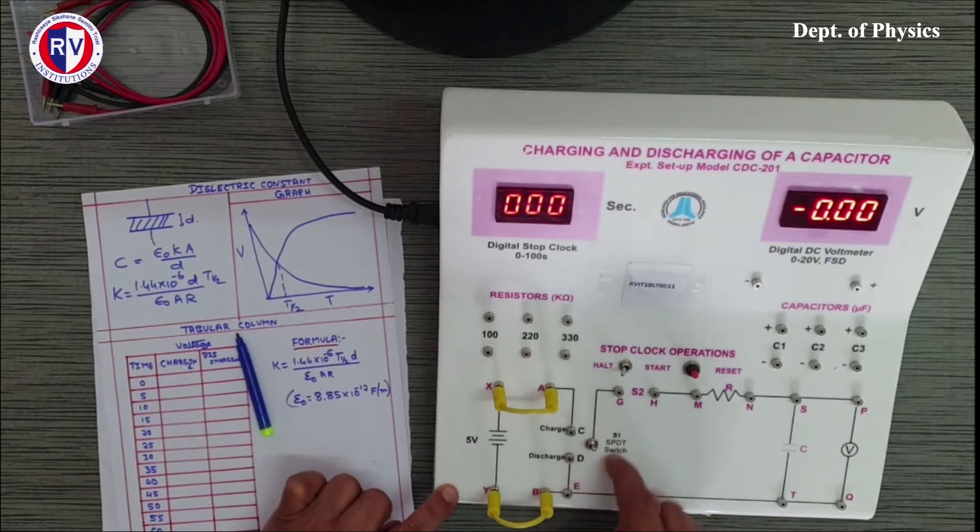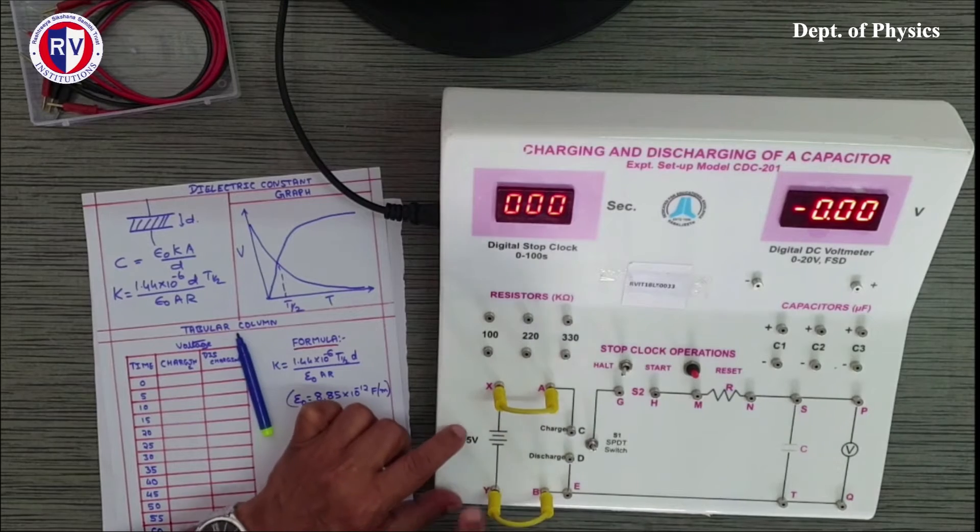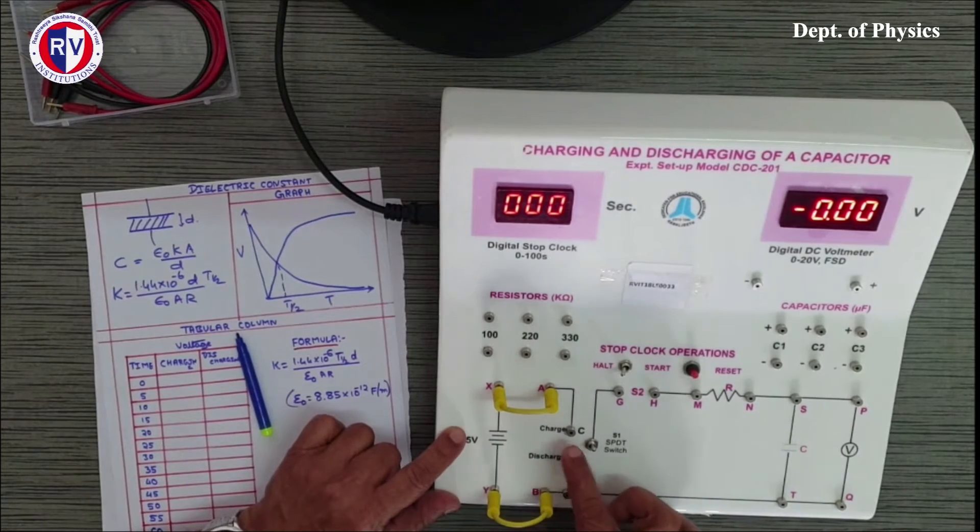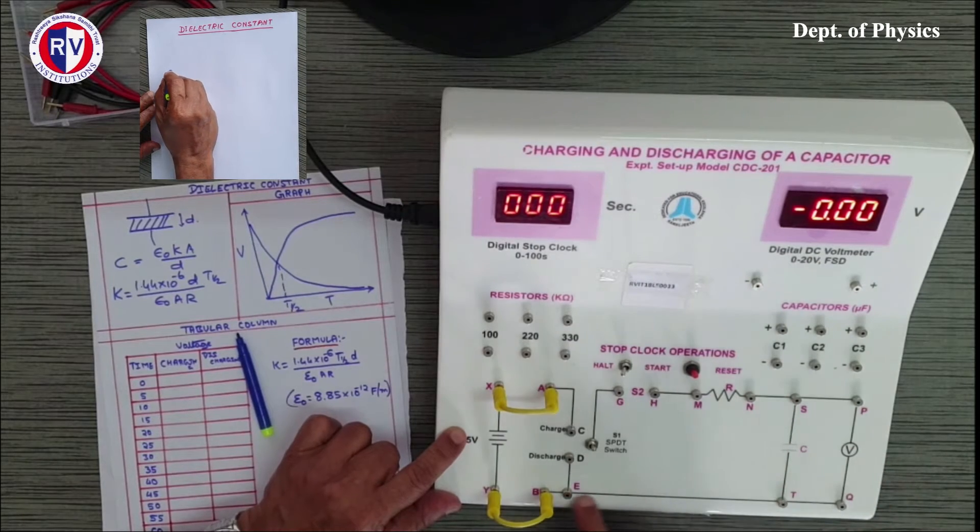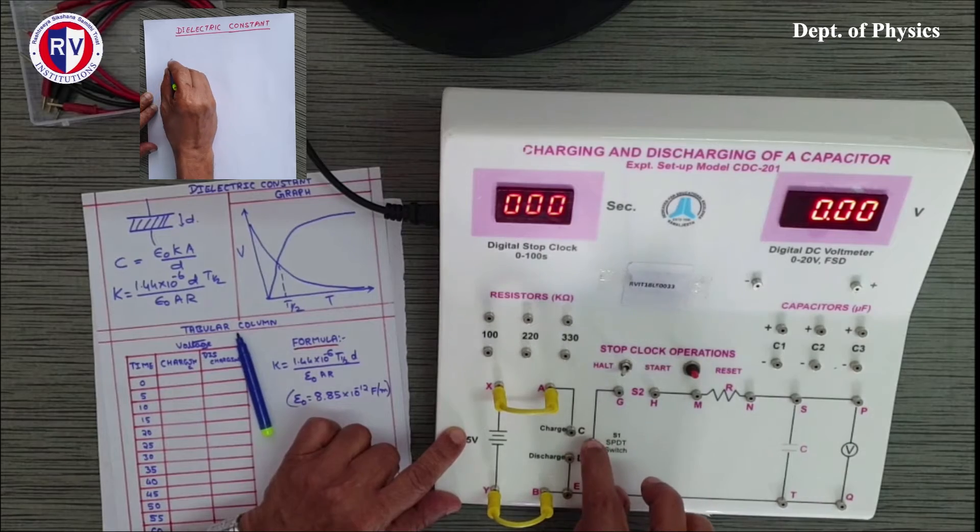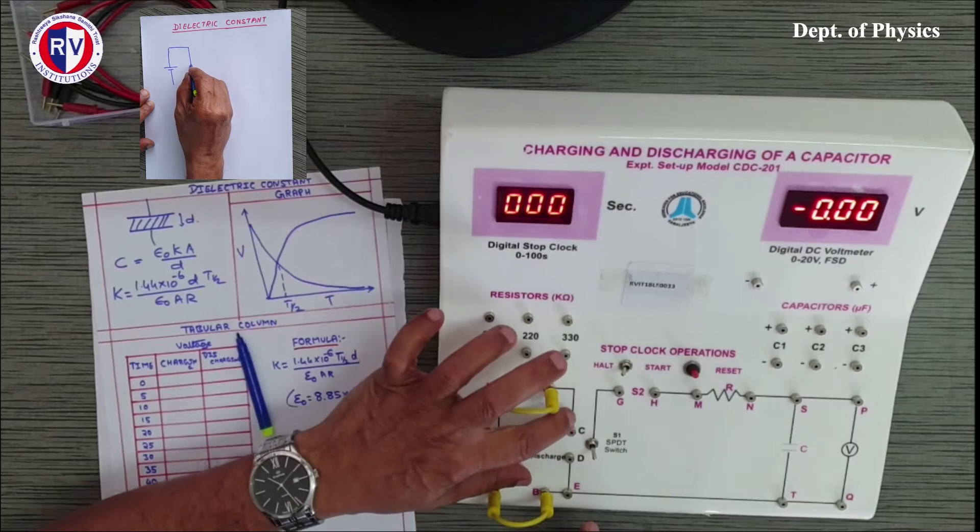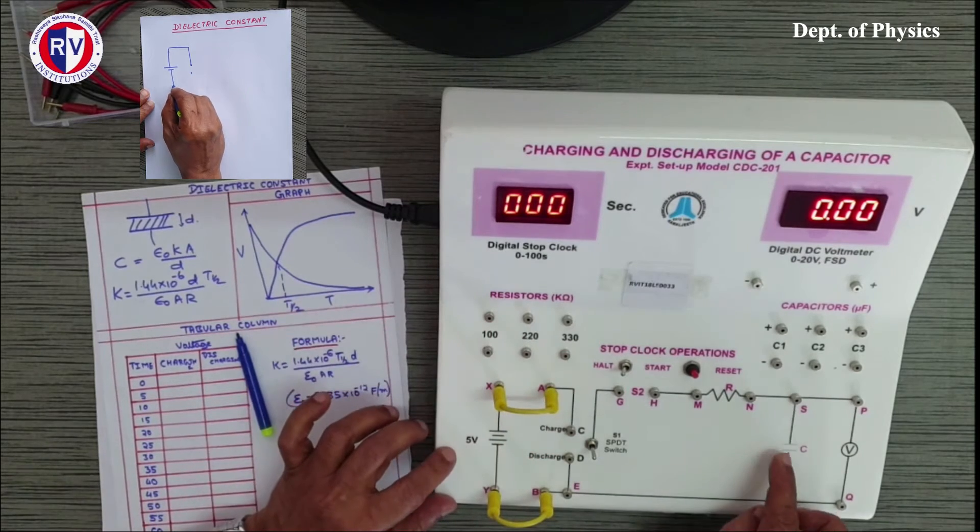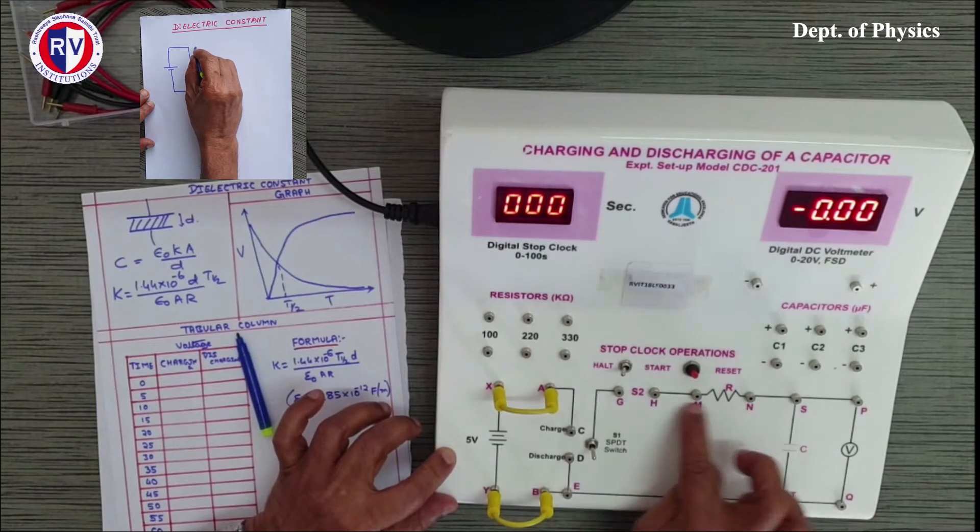Next, we have a charge discharge key. If it is put in the C or top side, it gives the charging mode. In the charging mode, the voltage source will get connected through the key to the resistor and the capacitor and comes back, circuit will be closed. Whereas, if you put it in the bottom side, D side, discharge mode, the voltage source will be disconnected and the capacitor, resistor, and key will be closed in this direction.